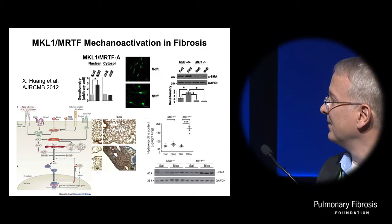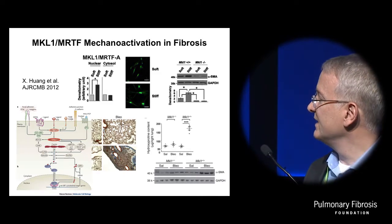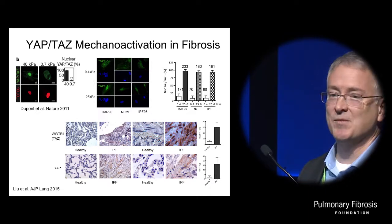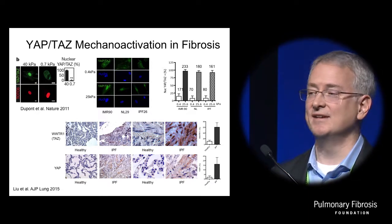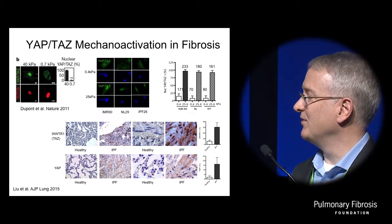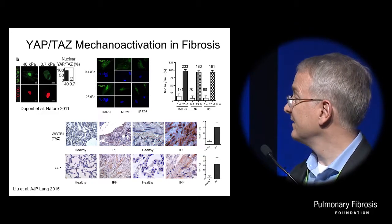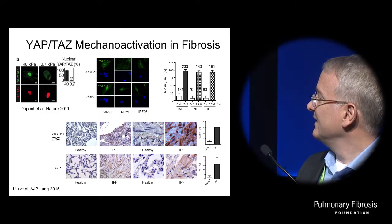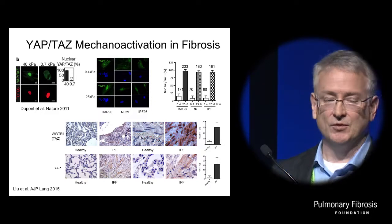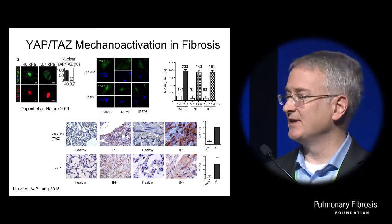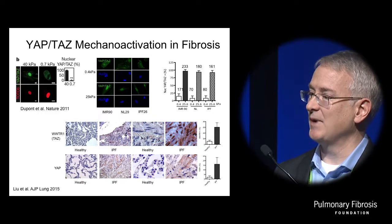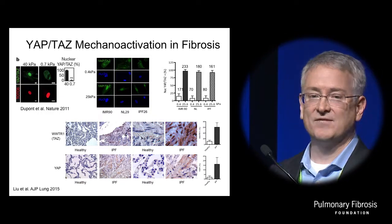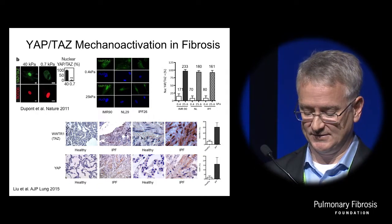They went on to show in a JCI paper published about four years ago that animals deficient in MKL1 were profoundly protected from developing fibrosis after bleomycin — they didn't develop alpha-SMA positive cells and didn't develop a robust fibrotic response. I think it was the first example of a mechanically activated pathway that could be targeted both genetically and pharmacologically to interrupt the process of scarring.